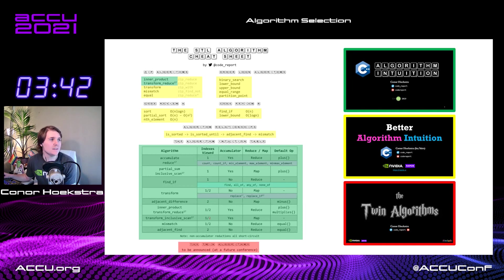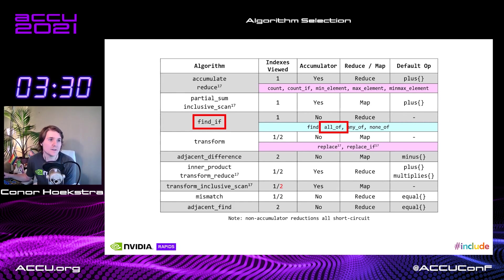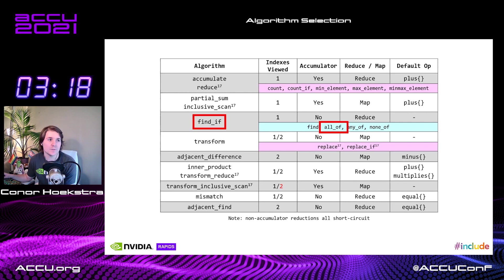But if we zoom into the algorithm intuition table that is a part of this cheat sheet, you will see that all_of is a specialization of find_if, as is any_of and none_of. But I failed to recognize this when coding the other day. So what I decided to do was write a short blog post pointing out that you should always choose the most specific or specialized version of algorithms.